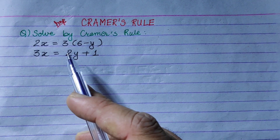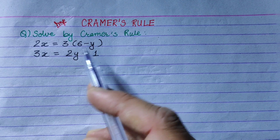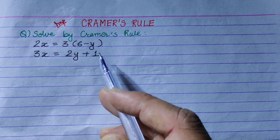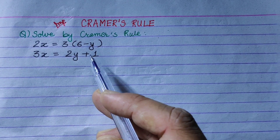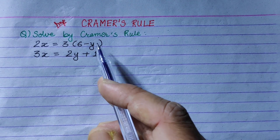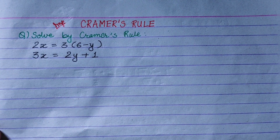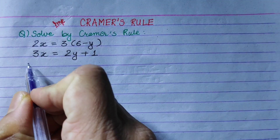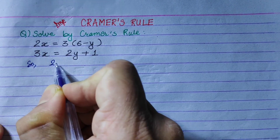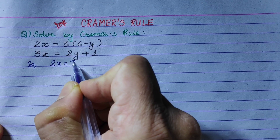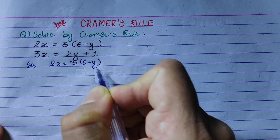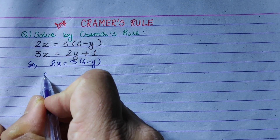The equations are: 2x equals 3 bracket, and 3x equals 2y plus 1. Now, let's look at the simultaneous equation. Let's look at the first equation, which is linear. Now let's simplify.